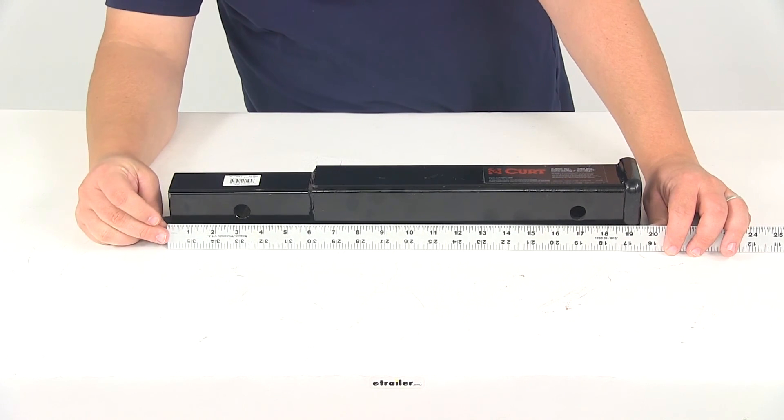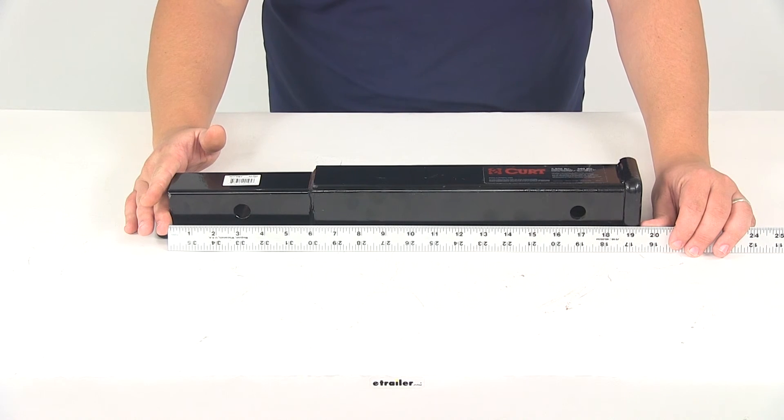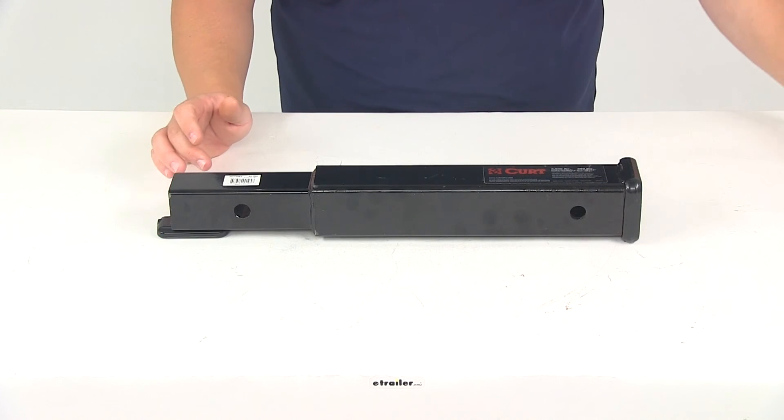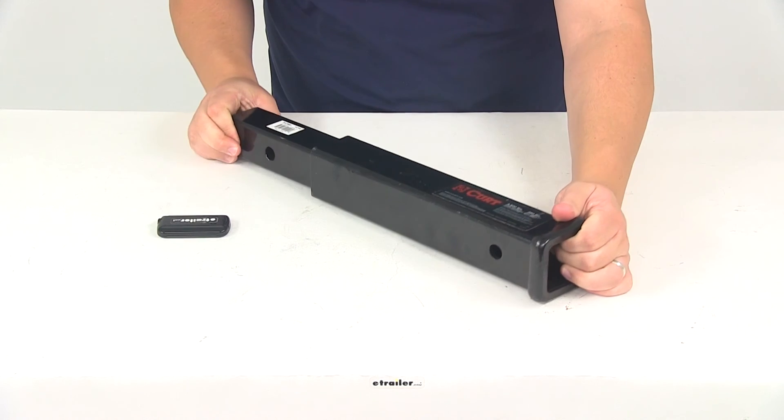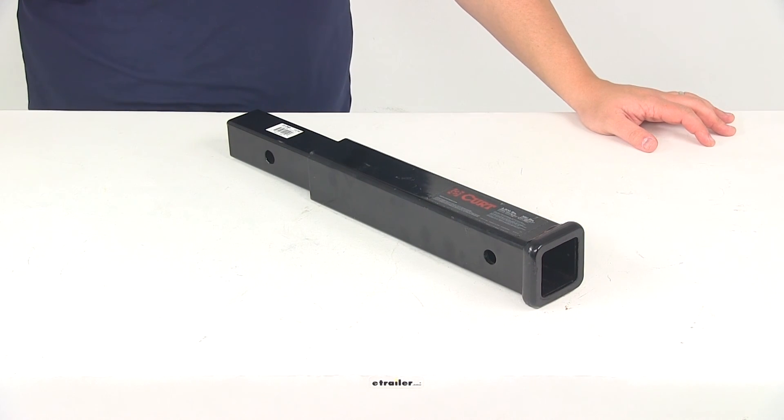The overall length measuring from edge to edge, that's going to give us a measurement of 19 and 3 eighths of an inch. That's going to do it for today's look at part number C45795.